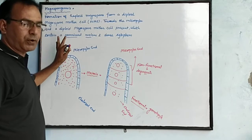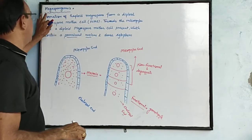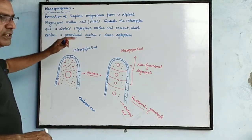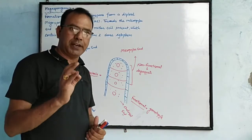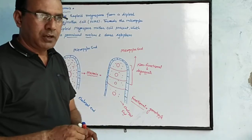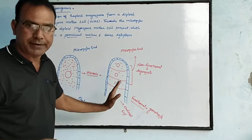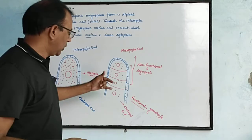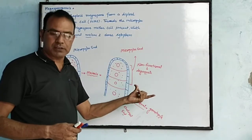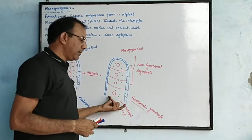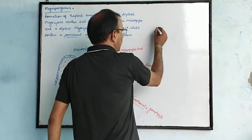Megasporogenesis means the formation of Megaspores from a diploid Megaspore mother cell. The Megaspore mother cell, present towards the micropylar end, contains a prominent nucleus and dense cytoplasm. Due to meiosis, this Megaspore mother cell divides into four haploid Megaspores. Three remain towards the micropylar end — these are non-functional and easily degenerate. One remains towards the chalazal end — this is functional and changes into the gametophyte.